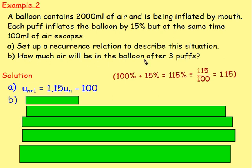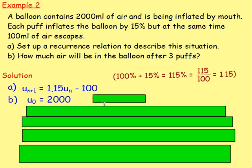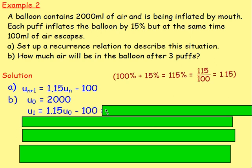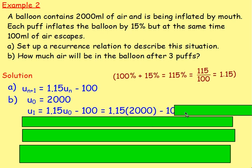For part b — how much air will be in the balloon after three puffs? Right at the start, u0 is 2,000 because we know there are 2,000 millilitres in the balloon just now. After one puff, we work out u1: using our recurrence relation, it's 1.15 times the previous term u0 take away 100. Substituting the numbers, 1.15 times 2,000 take away 100 gives us 2,200.